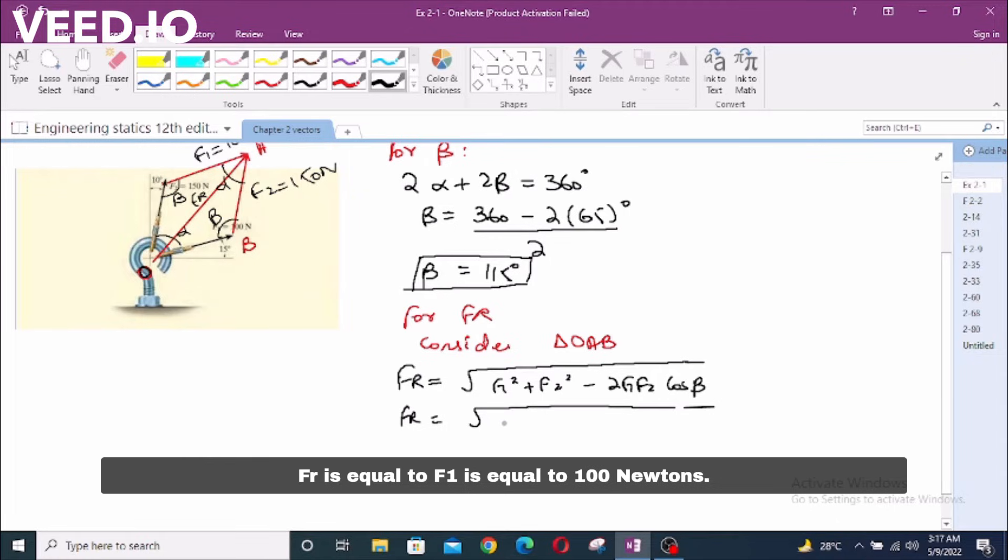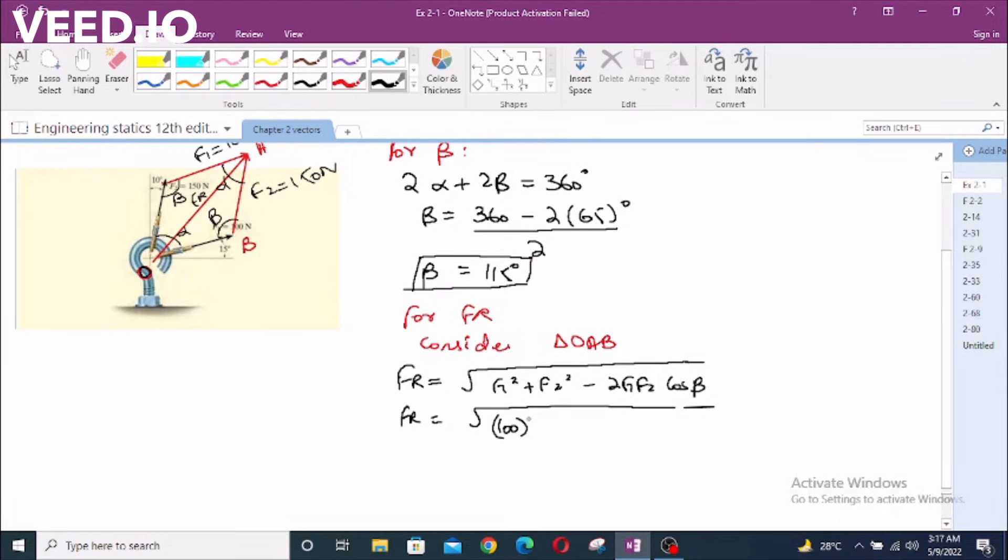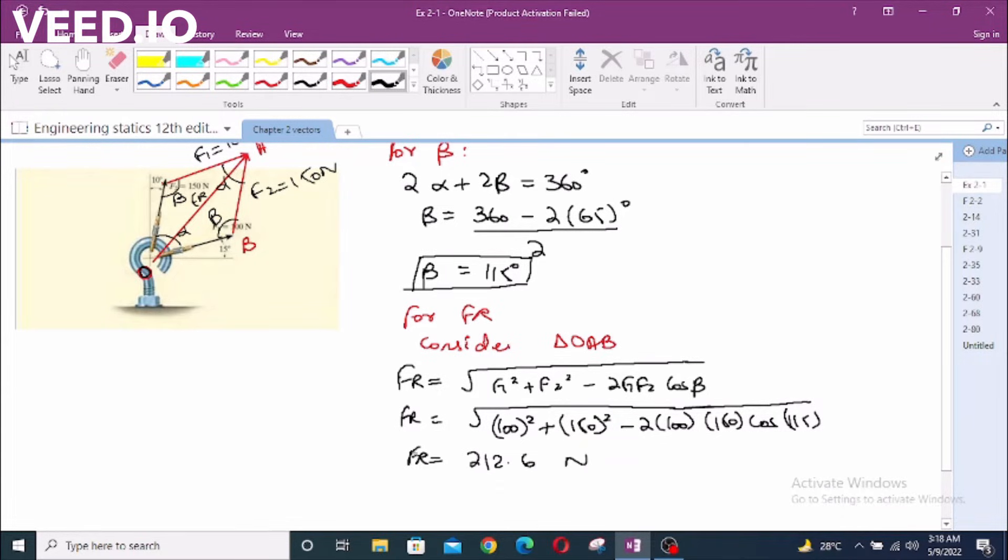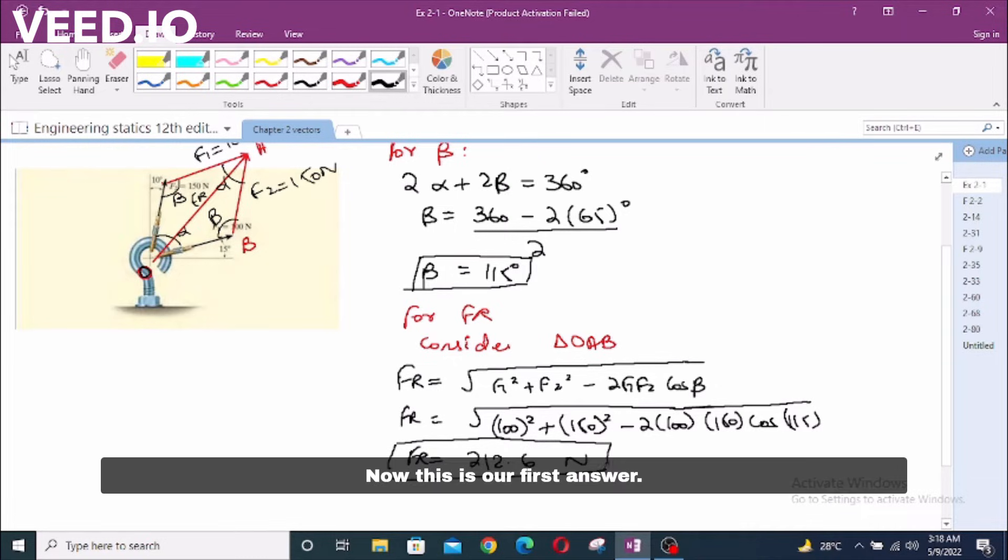F1 is equal to 100 newtons. F2 is equal to 150 newtons. So FR squared equals 100 squared plus 150 squared minus 2 times 100 times 150 cos 115. FR is equal to 212.6 newtons. This is our first answer.